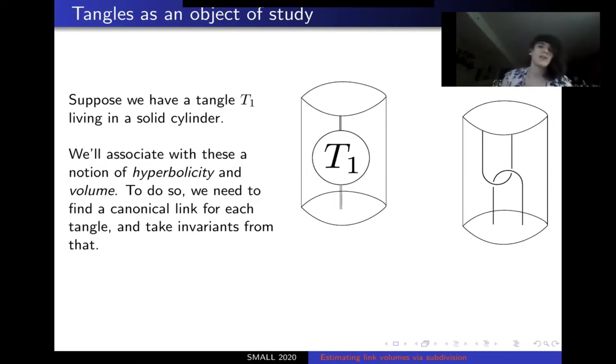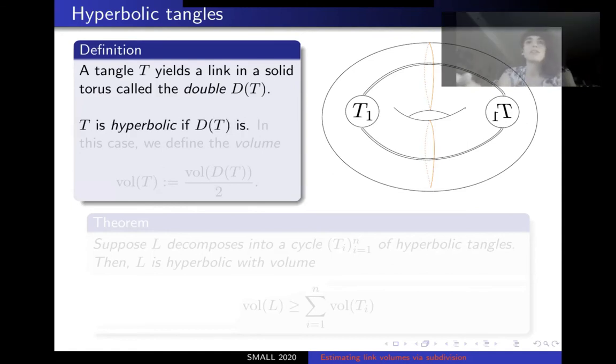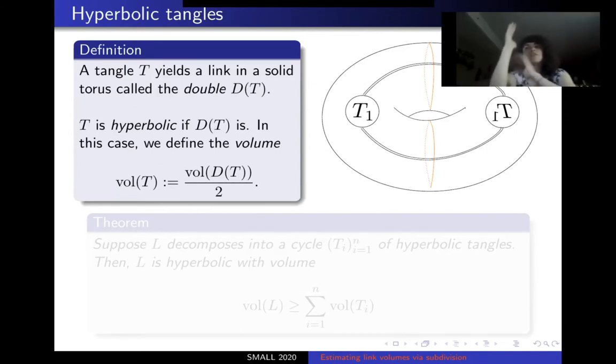So in order to do that, we're going to define hyperbolicity and volume of an individual tangle, and we're going to do so by bootstrapping those invariants from how we've defined them for links. So given a tangle, we define a canonical link in a solid torus called its double by essentially doubling across the top and bottom of the cylinder and reflecting it. So if the associated link, the double, is hyperbolic, then we say that the tangle is hyperbolic, in which case we define the volume of the tangle to be half of the volume of the double. So this is constructed in a fundamentally nice way, right? There's this symmetry across the middle, and this reflection fixes that middle totally geodesic surface over which we can use Agol-Storm-Thurston.